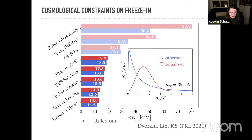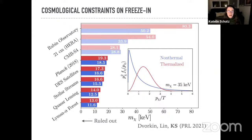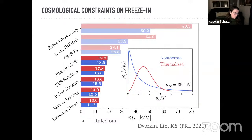Altogether, all the different cosmological probes give complementary, independent constraints on this theory of dark matter — completely independent from direct detection constraints, and independent from each other. That's one of the most powerful aspects of astrophysical and cosmological probes: it's a very big universe with many different lever arms for testing the same theory, and you have to be consistent with all of them.